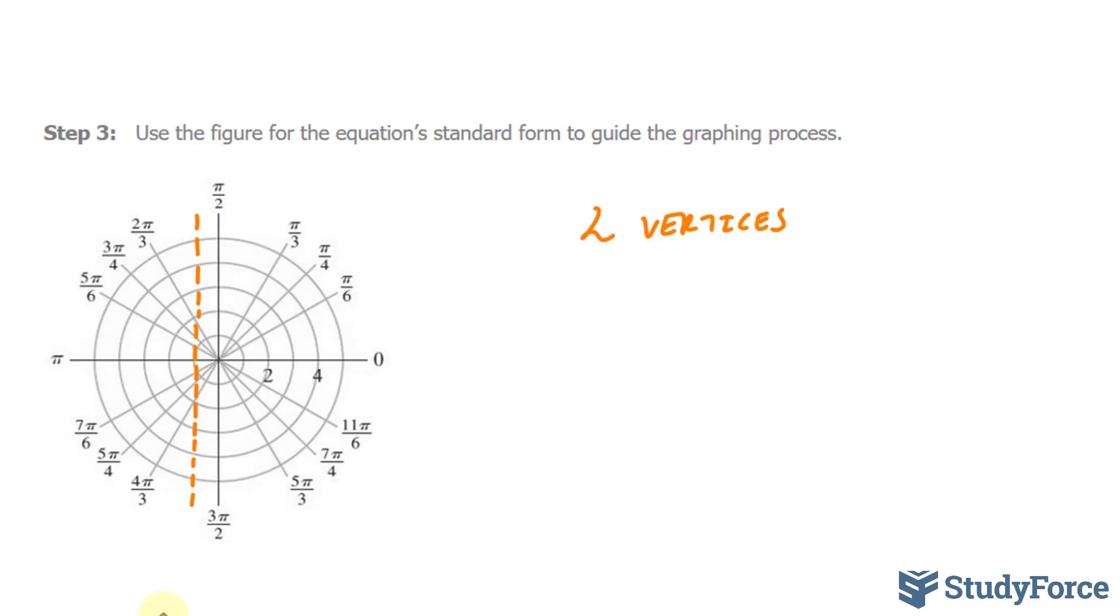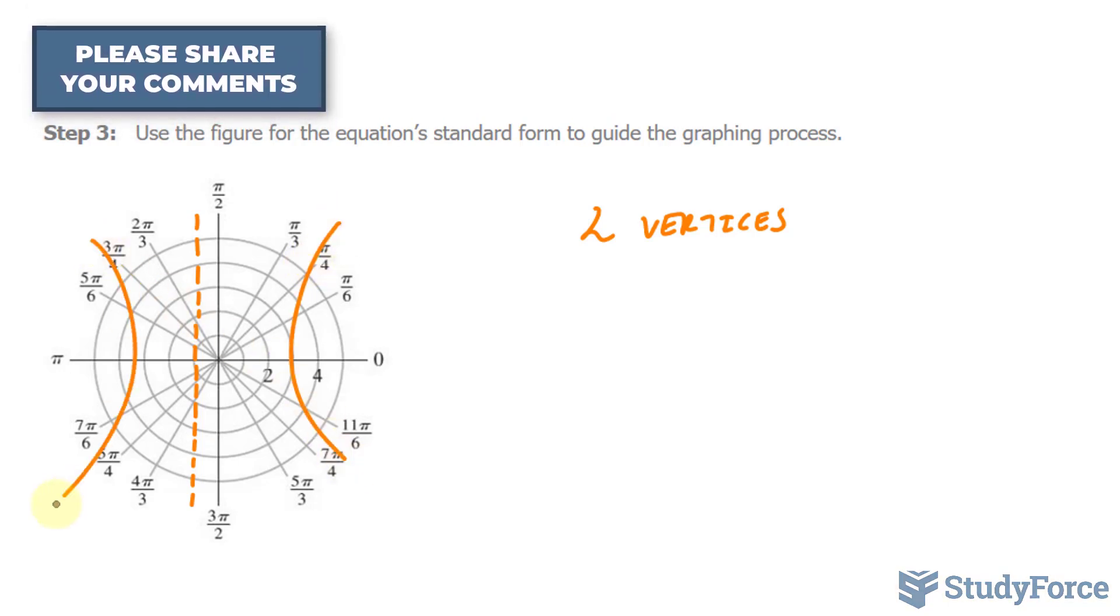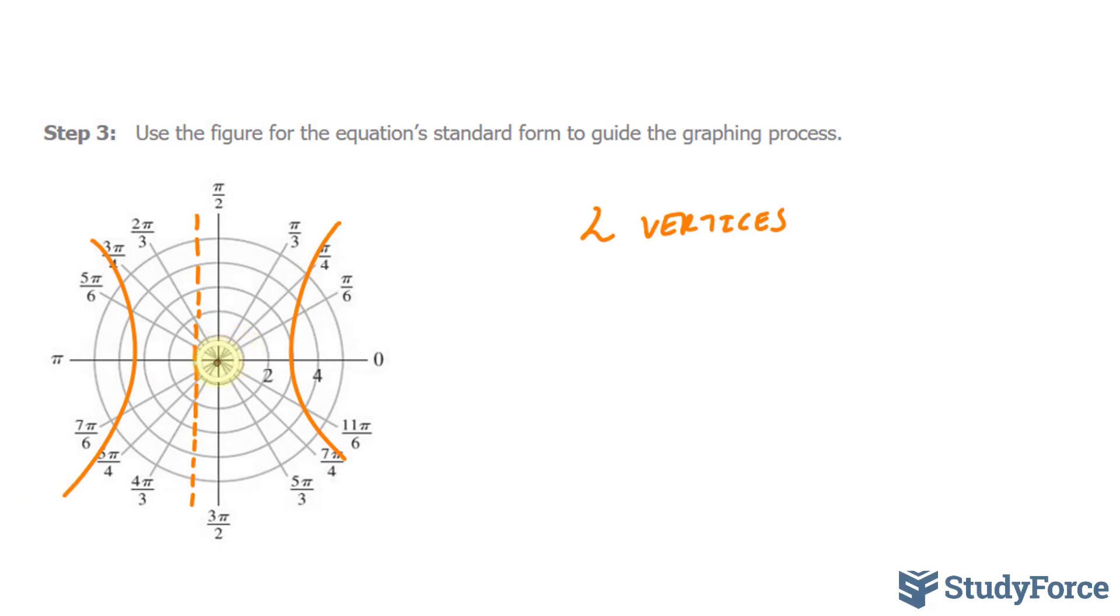That's our directrix. To find our vertices, and since our major axis is horizontal, we'll have a hyperbola that opens up like this. Therefore, we will have a vertex at angle 0 and a vertex at angle pi. Now, of course, this is just a sketch, so don't give it too much value. Let's go ahead and find out what the actual vertices are.